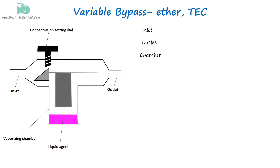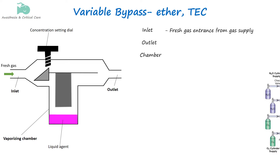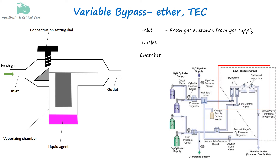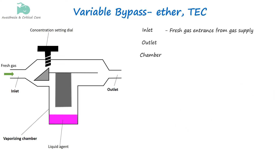Fresh gas enters the vaporizer through the inlet, connecting to a gas supply line, allowing a mixture of gases like oxygen or nitrous oxide to flow into the system. The vaporizing chamber is where liquid anesthetic is converted into vapor.